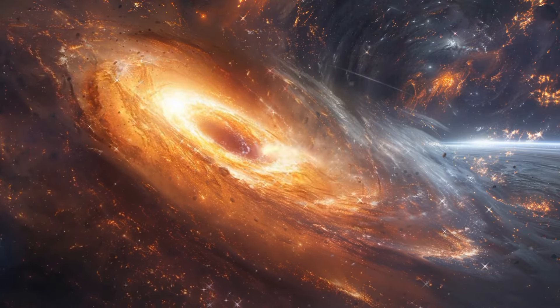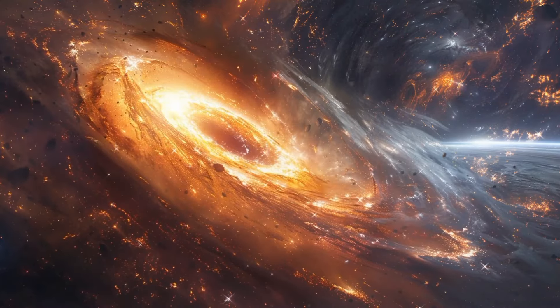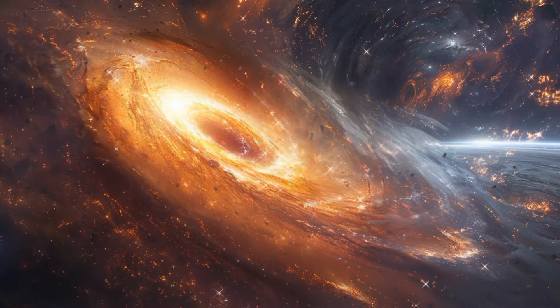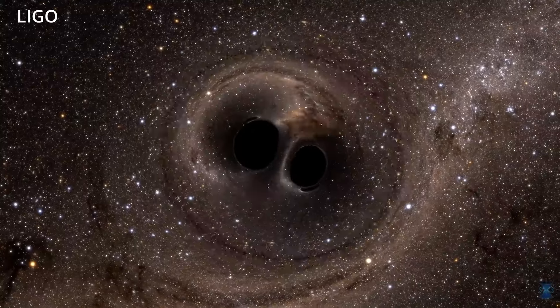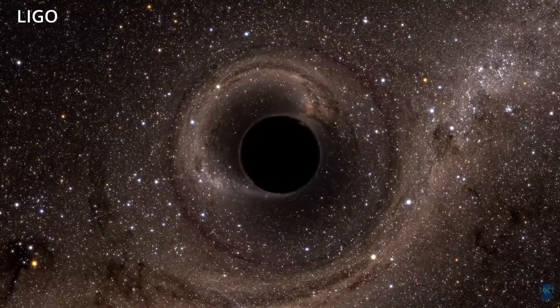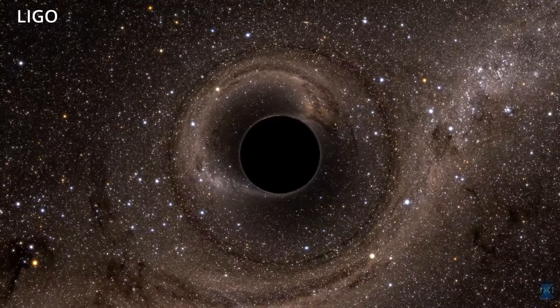Black holes can grow by accreting mass from their surroundings, including nearby stars and gas clouds. Black holes can merge to form larger black holes in the event—you guessed it—it's called the black hole merger.